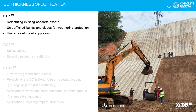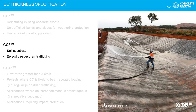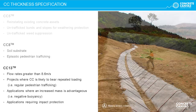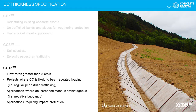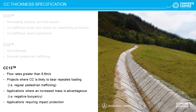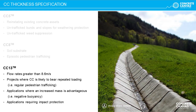It is important to ensure that the correct thickness of concrete canvas is specified for the application. CC5 is typically used to remediate existing concrete assets and to manage surface rainwater runoff or wind erosion only on untrafficked assets. CC8 is used to control flowing water on soil substrates. CC13 is used when there is a high risk of impact or in very abrasive conditions, often as an alternative to precast concrete and where flow velocities are expected to exceed 8.6 metres per second.